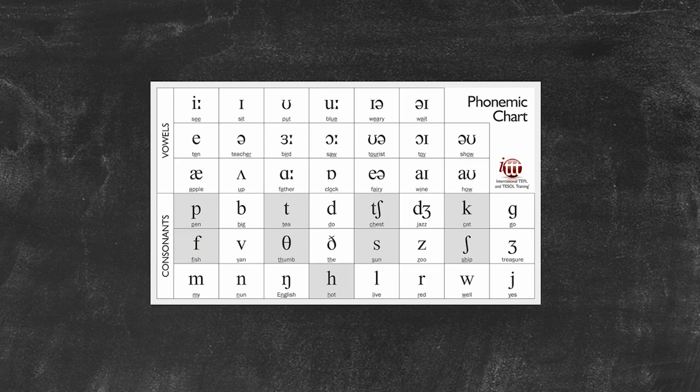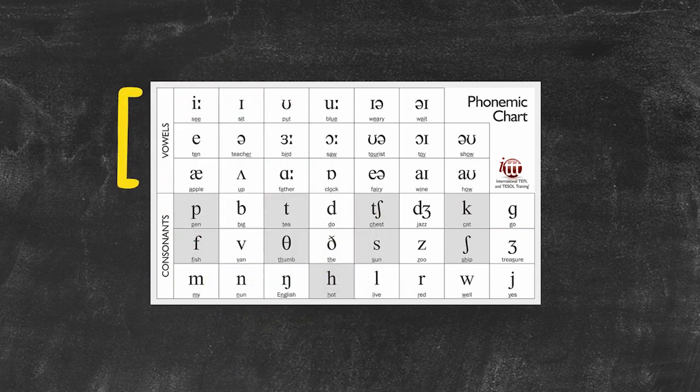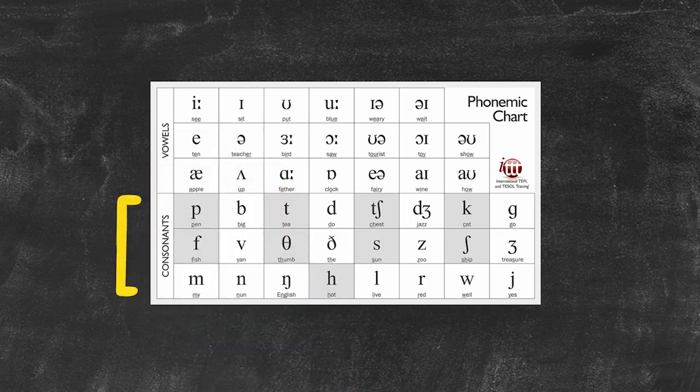Notice that none of the symbols in the vowel sections are shaded, but only a few are in the consonant section.